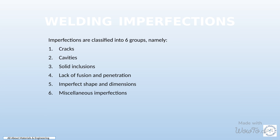Imperfect shape and dimensions refer to deviations from the intended form or size. Lastly, miscellaneous imperfections encompass any other flaws not covered by the previous categories. Understanding and addressing these imperfections is crucial to ensure the quality and reliability of products and materials.